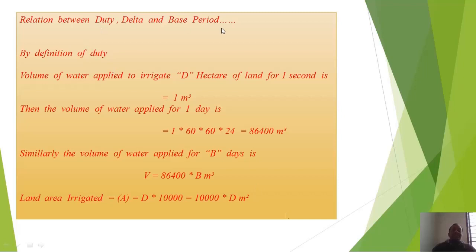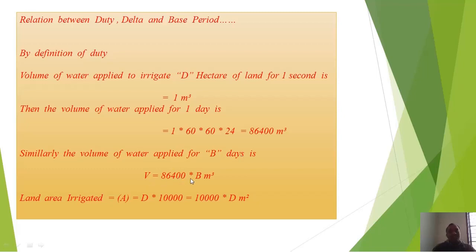Now the relation between duty, delta, and base period: by definition of duty, the volume of water applied to irrigate capital D hectares of land for one second is one cubic meter. The volume of water applied for one day is 1 × 60 × 60 × 24 = 86,400 cubic meters. Similarly, the volume of water applied for B days is V = 86,400 × B cubic meters.